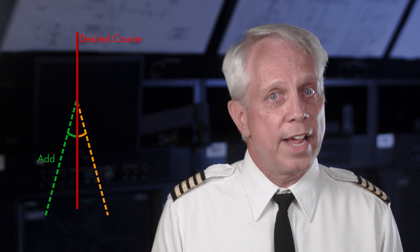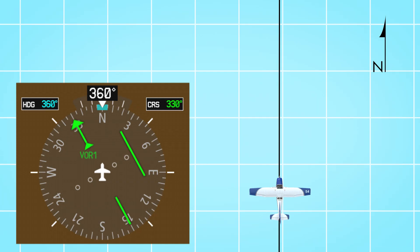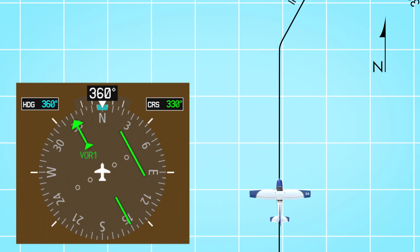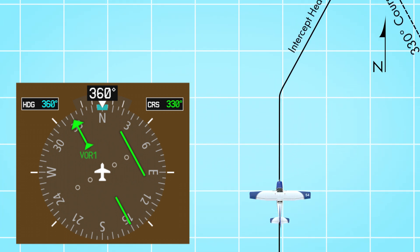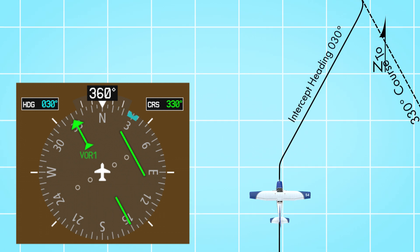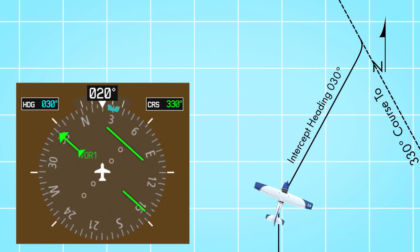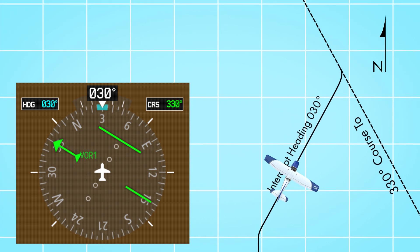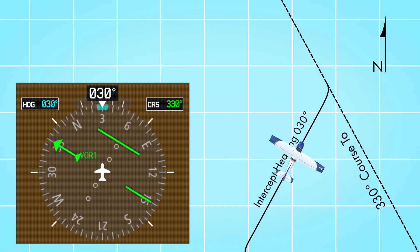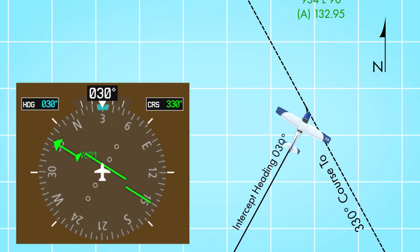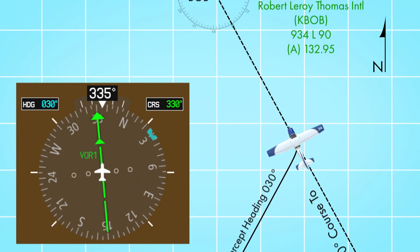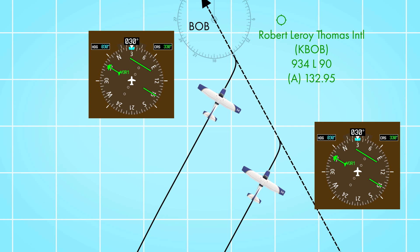If you're left of course, add the intercept angle. But if you're right, subtract. Since you're trying to intercept the 330 course, adding 60 degrees gives you an intercept heading of 030. Turn your airplane to that heading. As you begin your course intercept, you'll see the CDI begin to slide towards the center. As the needle begins to center up, turn back to the left to a heading of 330. The rate of closure will depend on how close you are to that VOR — the further away you are, the slower that's going to happen, and vice versa.